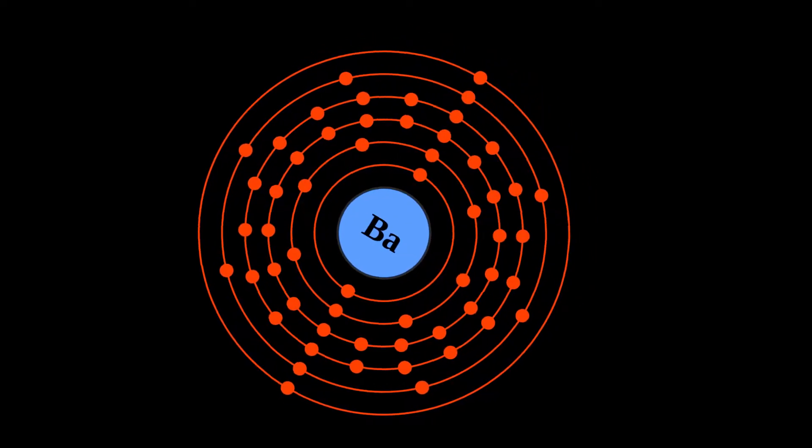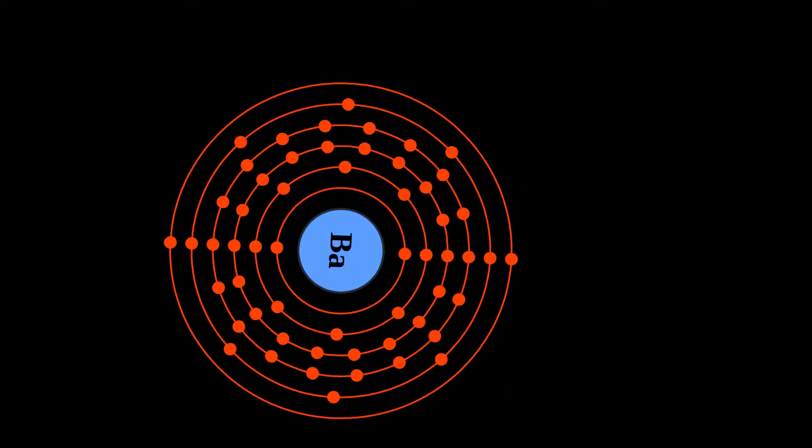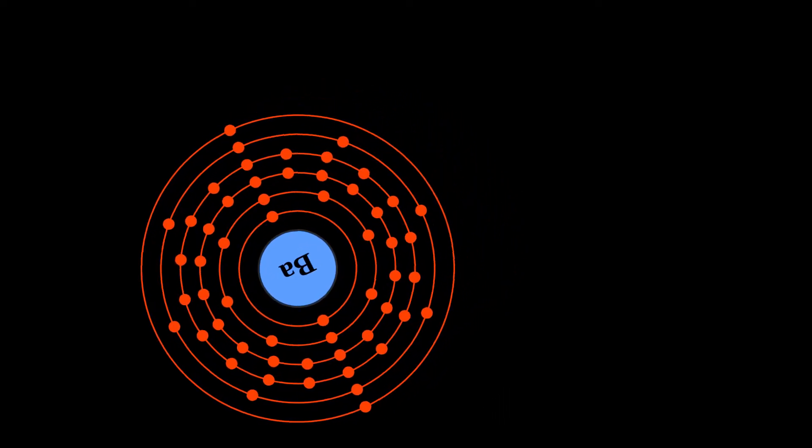Barium is a chemical element with symbol Ba and atomic number 56. It is the fifth element in group 2 and is a soft, silvery alkaline earth metal.